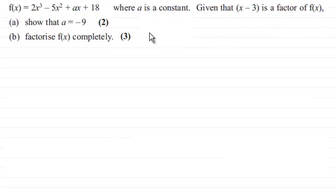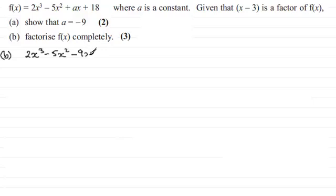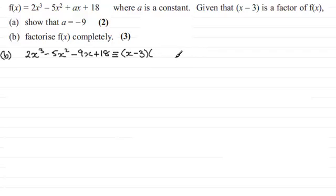If you'd like to have a go at this and haven't done so already, just pause the video for a moment. Okay, welcome back. So for part B, let's copy down what we've got: 2x cubed minus 5x squared, and we now know that a is minus 9, so it's going to be minus 9x plus 18. This is going to be identical to x minus 3, because it's a factor, multiplied by the remaining quadratic factor.